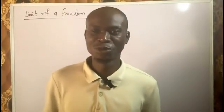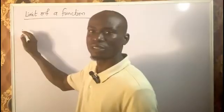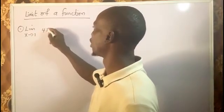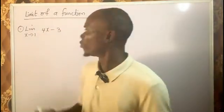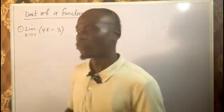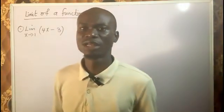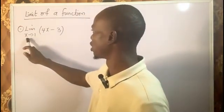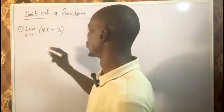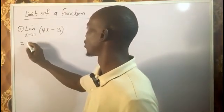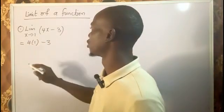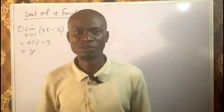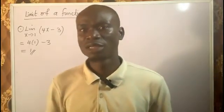Welcome to today's lecture. We're going to start with this example: limit as x tends to 1 of 4x minus 3. In a situation like this, what we need to do is substitute 1 for x anywhere we see x in the expression. When we do that, we get 4 times 1 minus 3, which is 4 minus 3, giving us 1. So that is the answer of that limit.